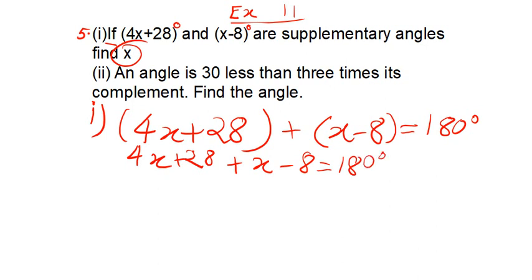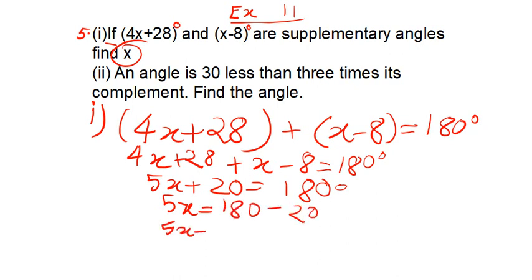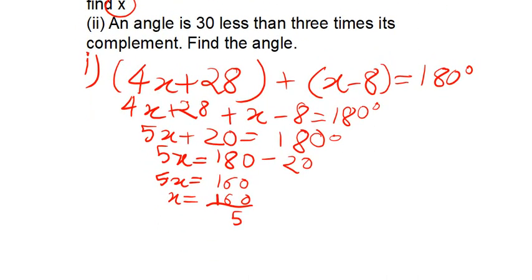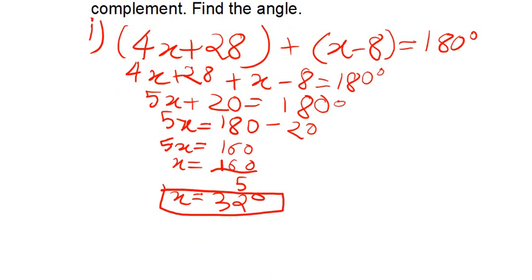Add the like terms together, 5x, 28 minus 8, so plus 20 is equal to 180 degrees. So 5x is equal to 180 minus 20 degrees, so 5x is equal to 160 degrees. And you will write here, x is equal to 160 upon 5, so x is equal to 32 degrees. This is our answer to our question, that x is equal to 32 degrees.